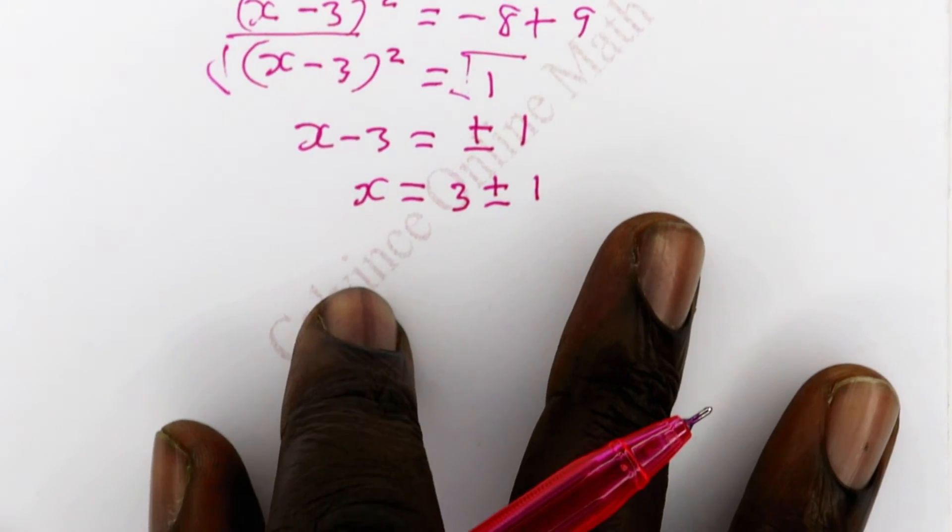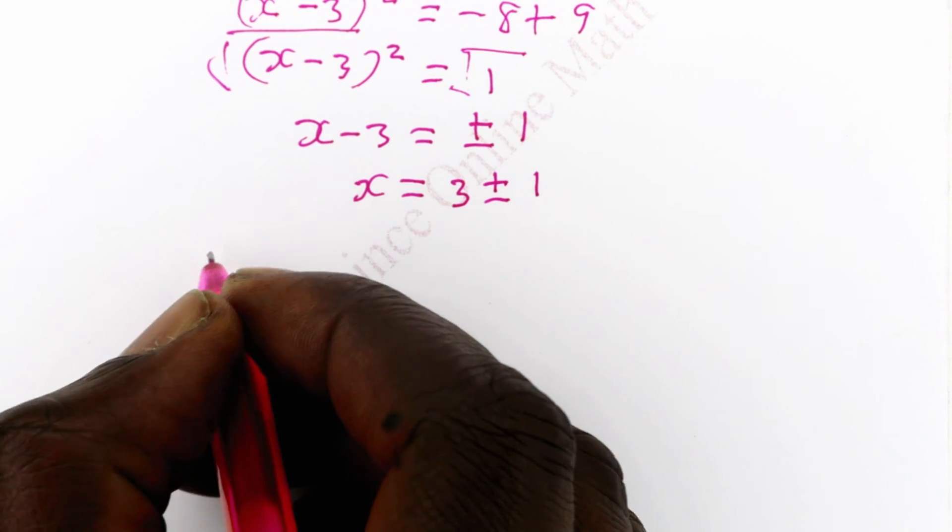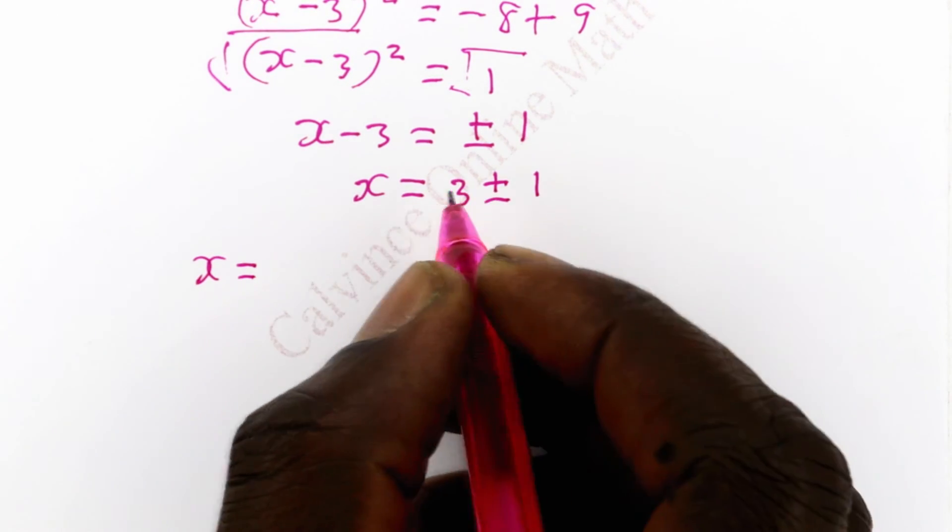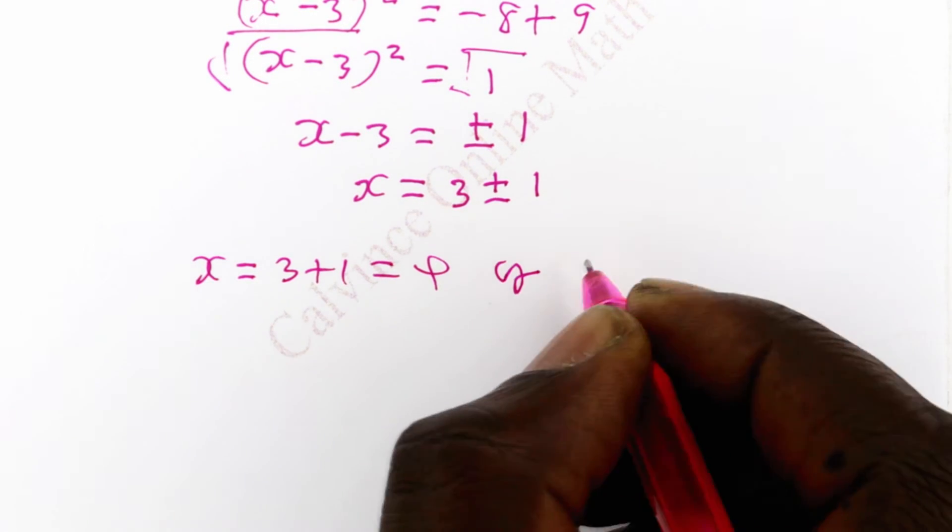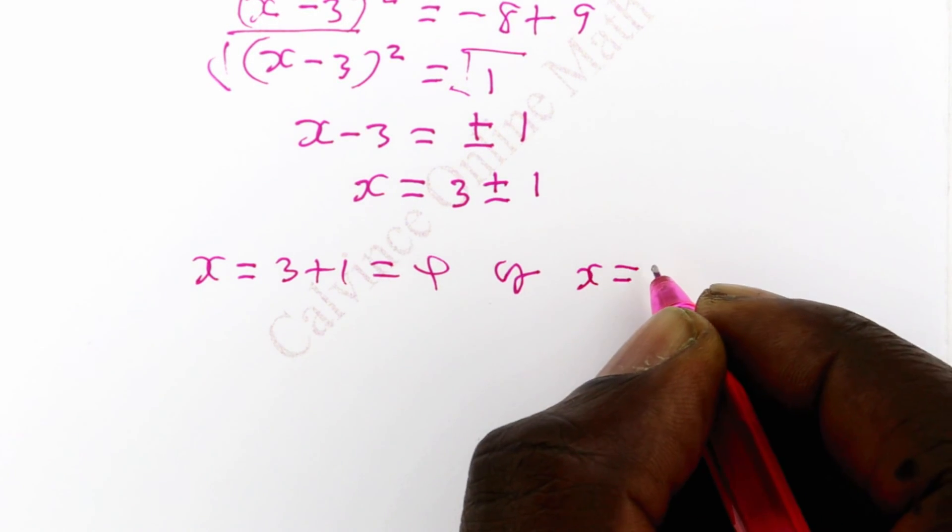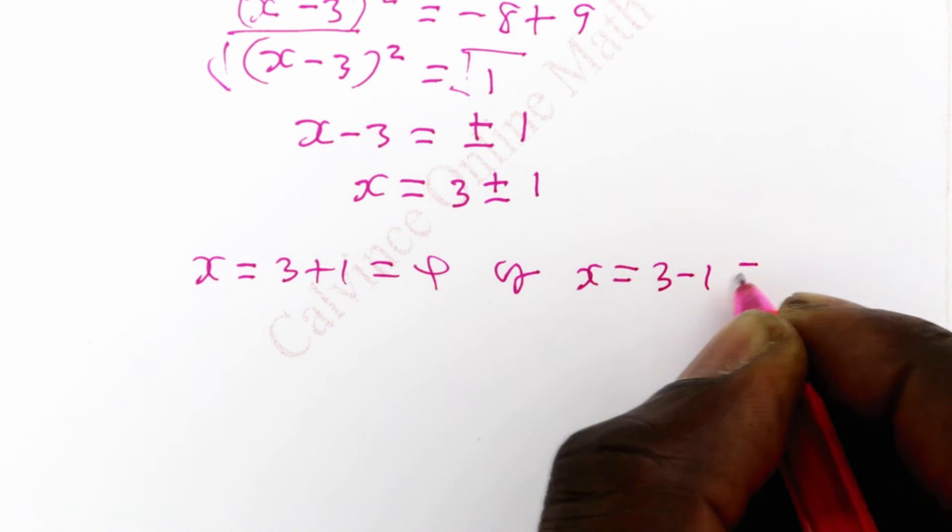So the two solutions will be the first one is x is equal to 3 plus 1 which is 4, and the second one will be x is equal to 3 minus 1 which is 2.